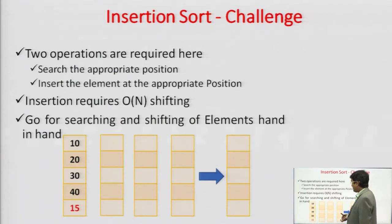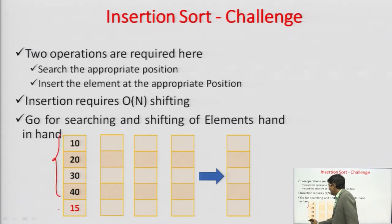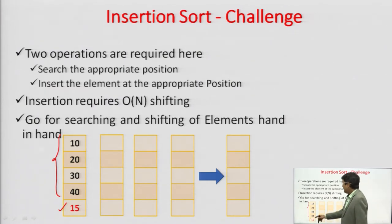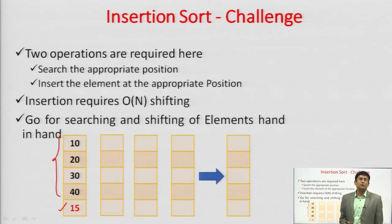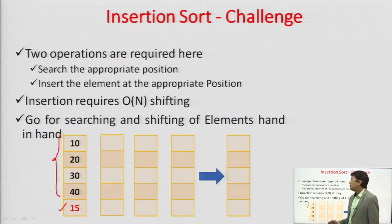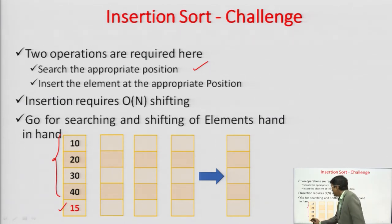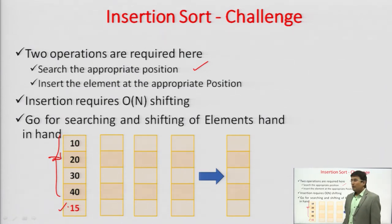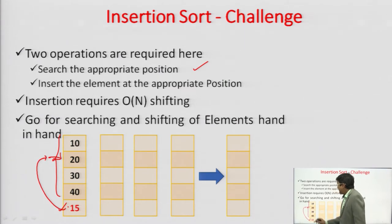Suppose we have the array: 10, 20, 30, 40, and 15. You can see that the first part is sorted and the unsorted part contains only one element, 15. To insert 15 into the sorted part, we first have to find the position where it should be inserted. So the first operation is finding the correct position through search. Once we have found that position, we insert the element — and here, 15 should be inserted after 10.